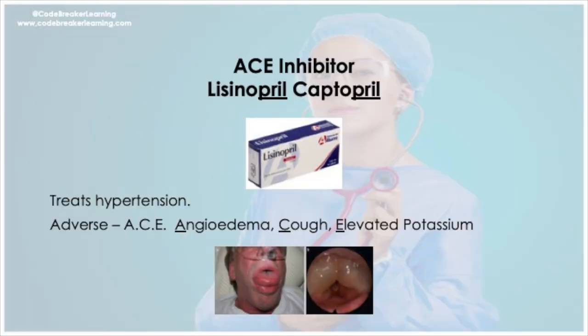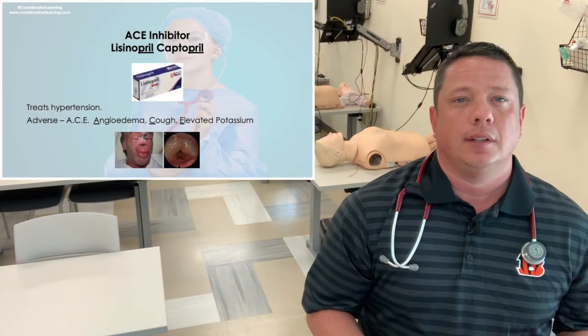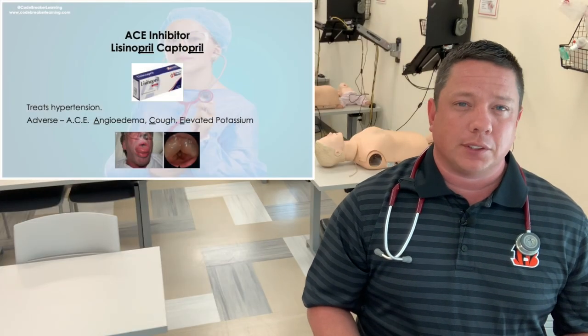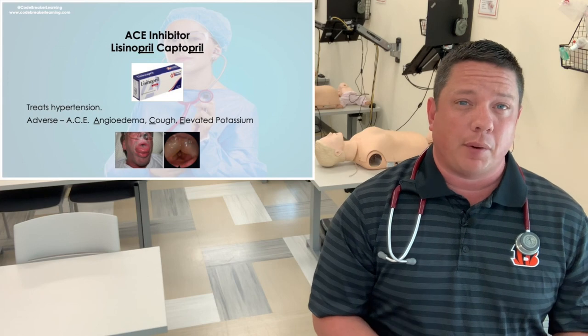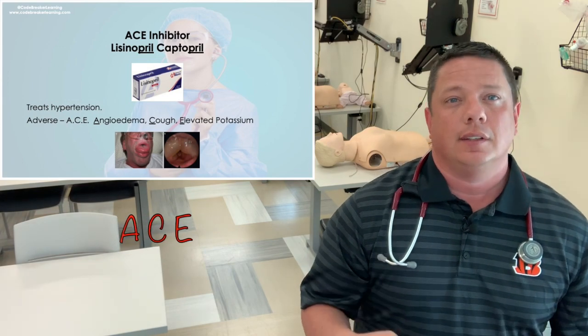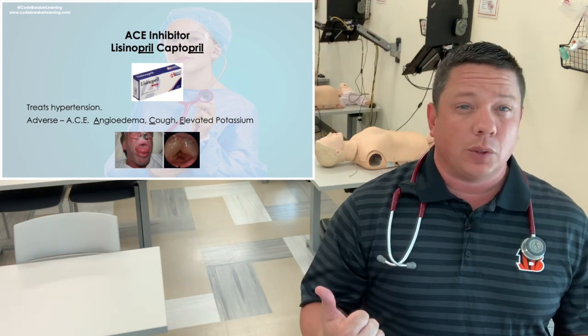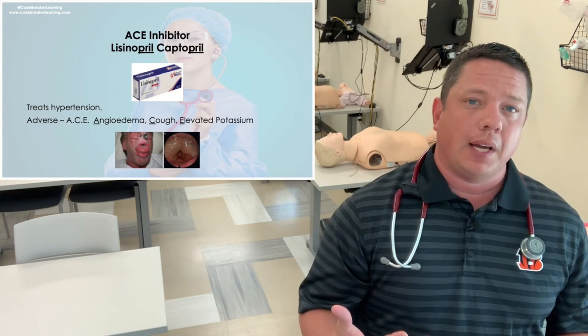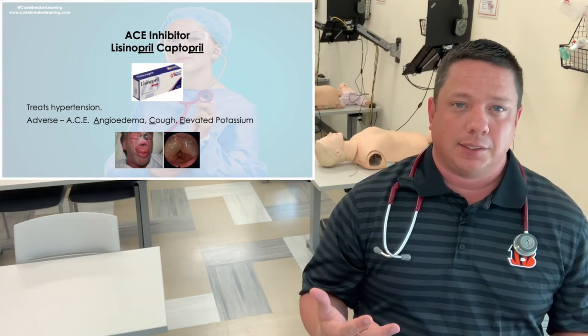ACE inhibitors are medications that have a suffix of -pril. So this is captopril, this is lisinopril. These medications — you want to remember the adverse effects by remembering ACE: A-C-E. A is going to be angioedema, C is going to be cough, and E is going to be elevated potassium.